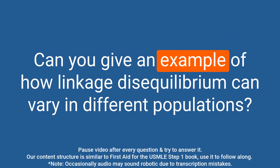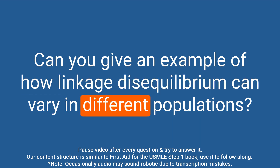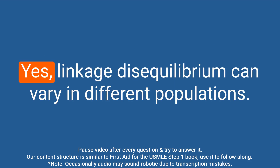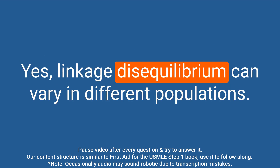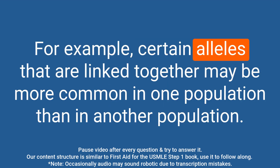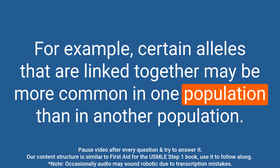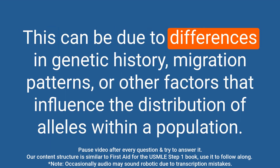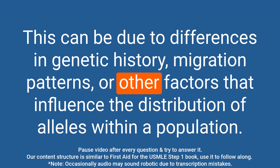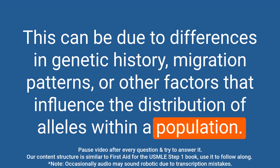Question: Can you give an example of how linkage disequilibrium can vary in different populations? Answer: Linkage disequilibrium can vary in different populations. For example, certain alleles that are linked together may be more common in one population than in another. This can be due to differences in genetic history, migration patterns, or other factors that influence the distribution of alleles within a population.